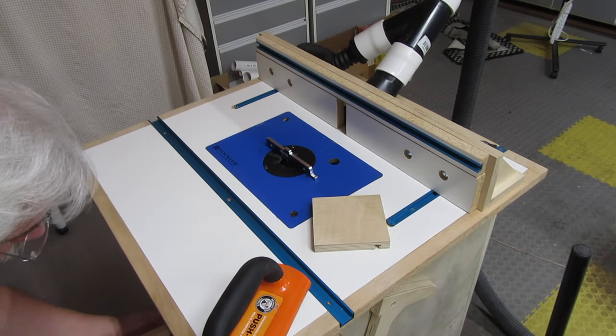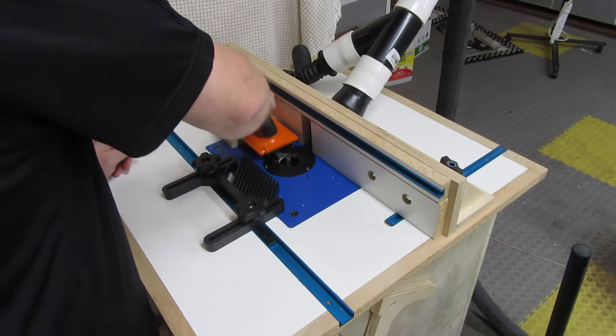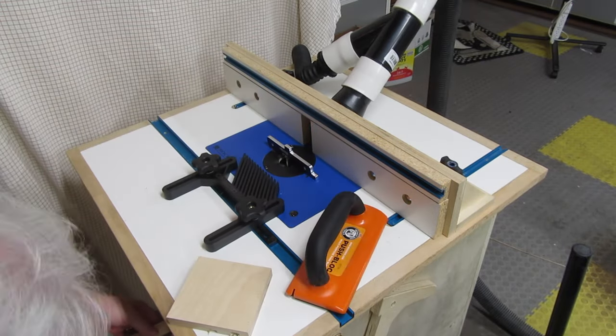I set the height for the first pass to a quarter-inch. Then three-eighths of an inch for the second pass.